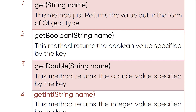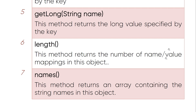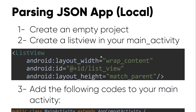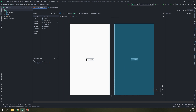The second method is getBoolean(String name), which returns the boolean value specified by the key. getDouble also gets a double value, getInt returns an integer, and getLong returns a long. The length() method returns the number of name-value mappings in the object. The names() method returns an array containing the string names in this object.